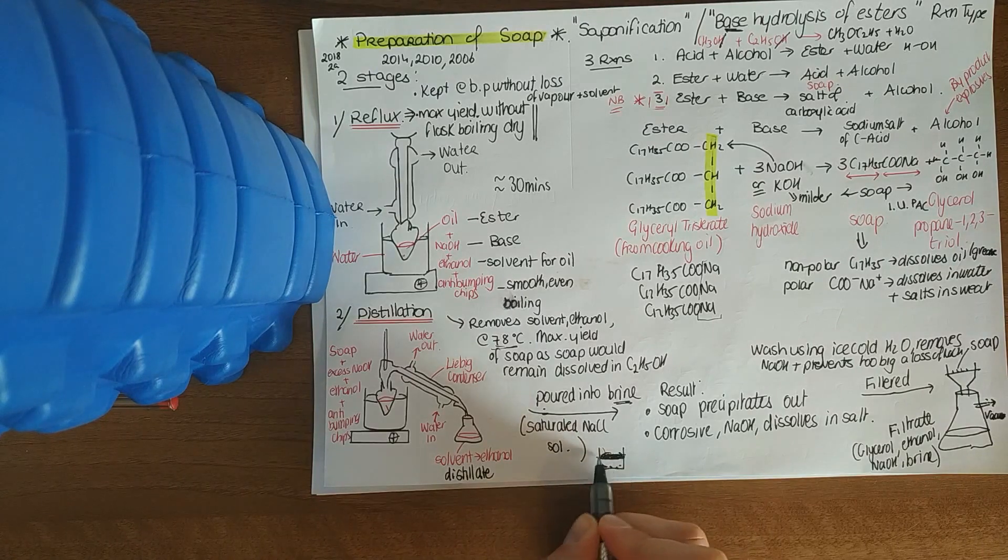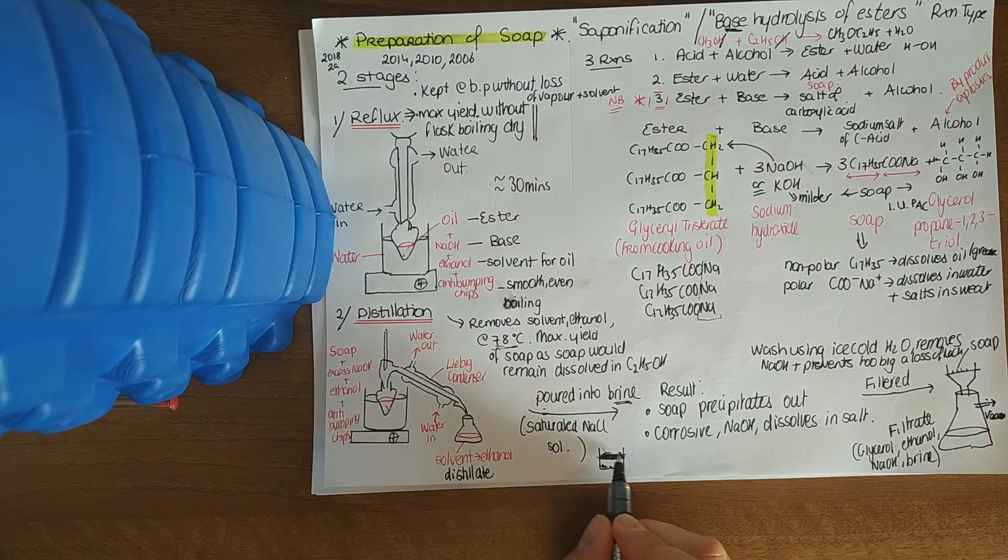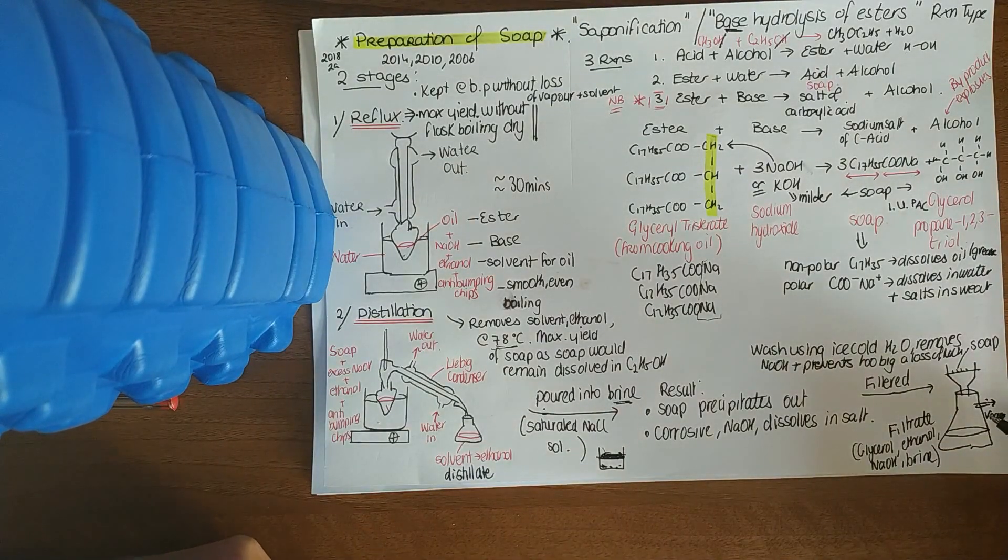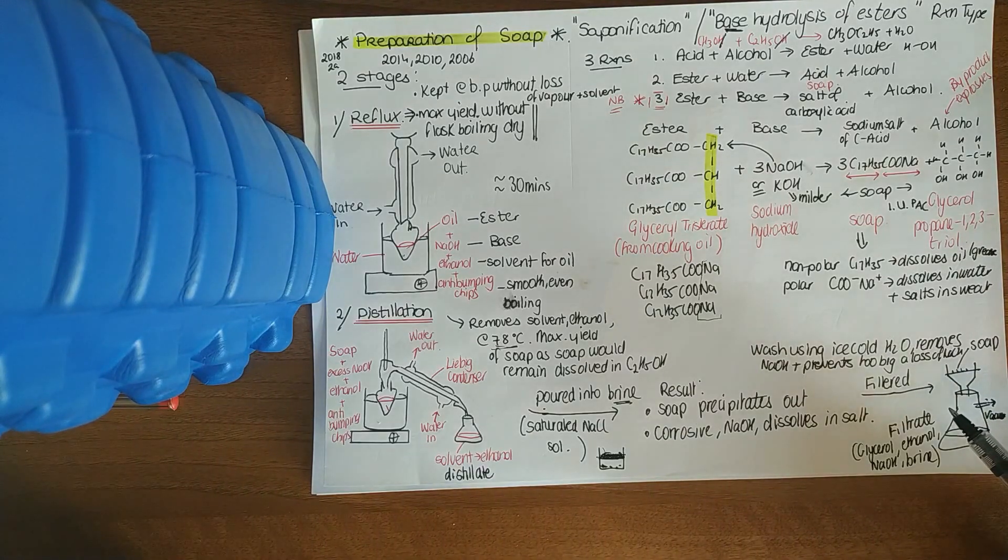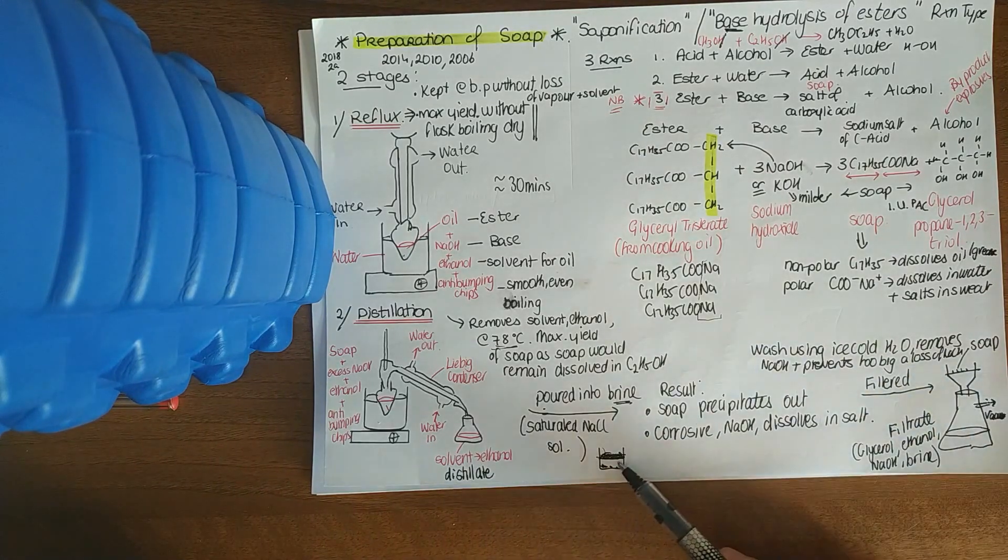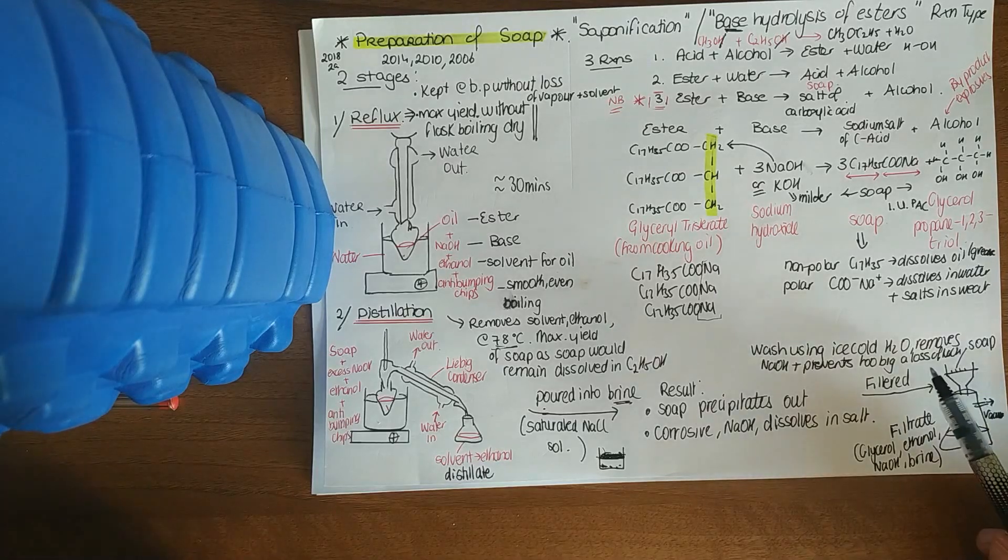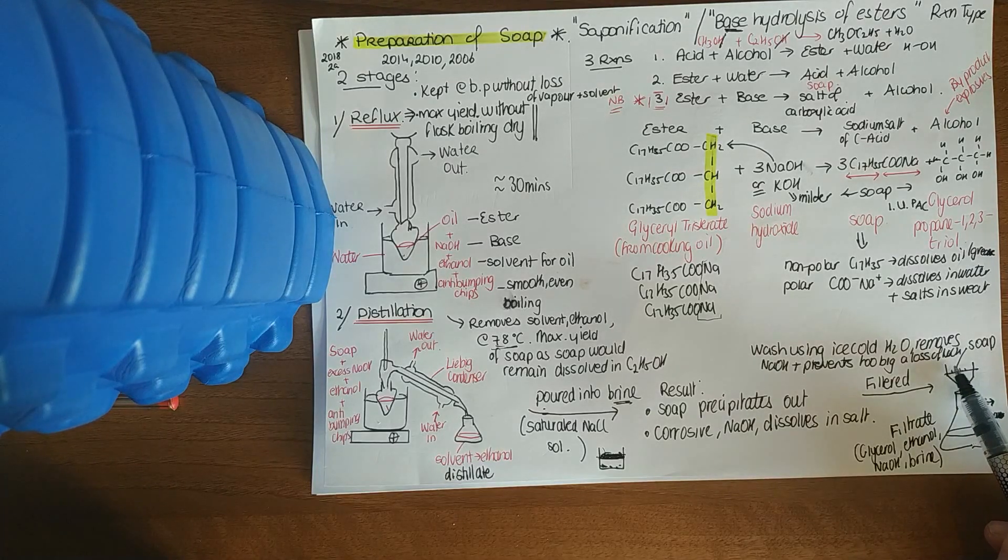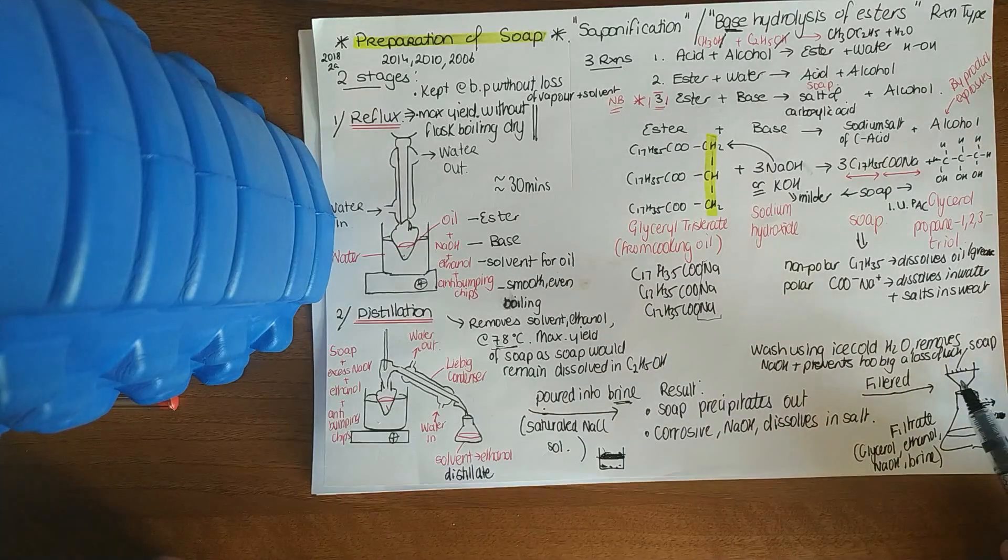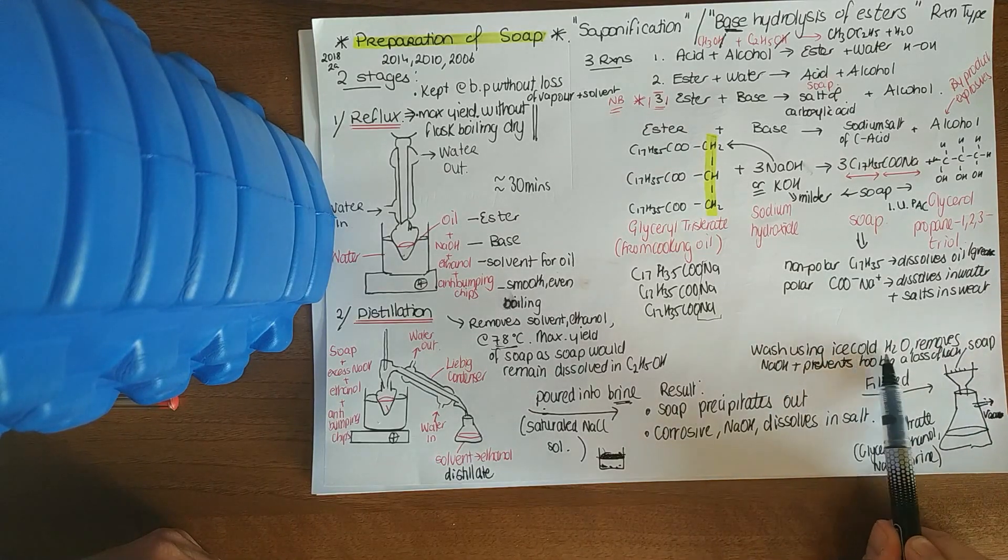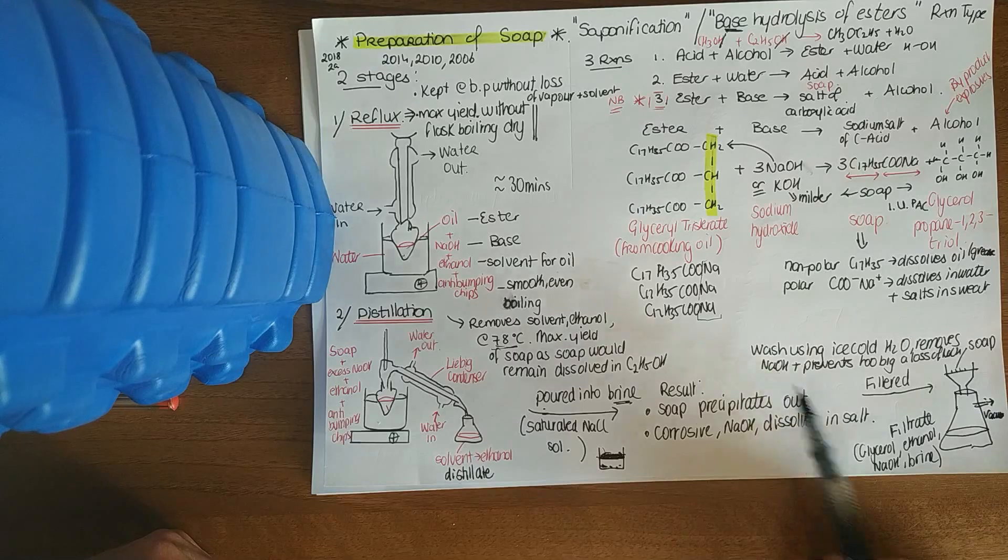You'll get this murky looking soap settle to the top. Once you have that, you carry out either vacuum filtration or suction filtration. You pour this mixture through the Buchner flask or through the filter paper. Your soap will stay behind on your filter paper, and then you can wash it with ice cold water. Washing with ice cold water removes any of that sodium hydroxide. Being cold water, it's not going to be as soluble in cold water, so you'll maximize the yield. So wash, use ice cold water, remove sodium hydroxide which is corrosive, and prevents too big a loss of your soap.